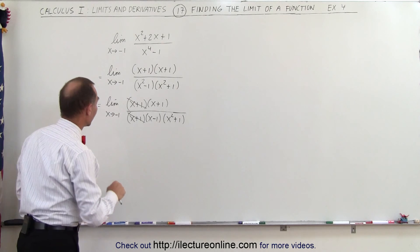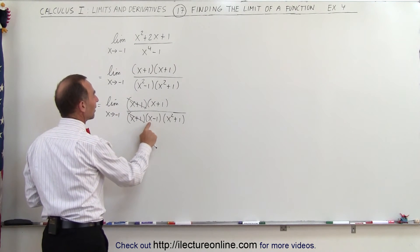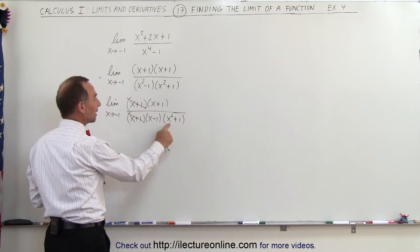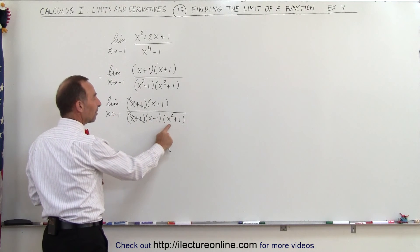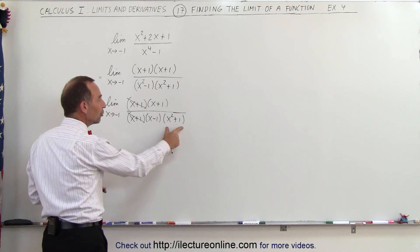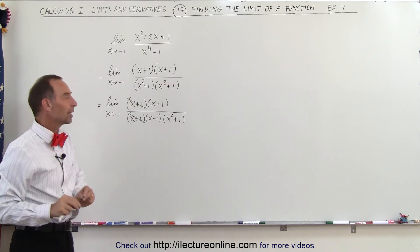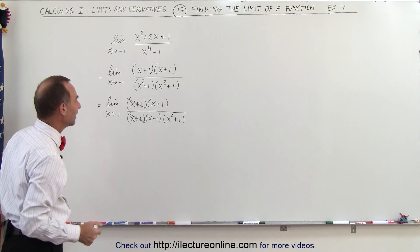So now I think we're set, because when we plug in negative 1 here, we have negative 1 minus 1 is negative 2, which is not 0. We'll plug in negative 1 here, that's negative 1 squared is a positive 1, plus 1 that's a positive 2, which is again not 0. So we no longer have a 0 denominator situation, we can now go ahead and take the limit.